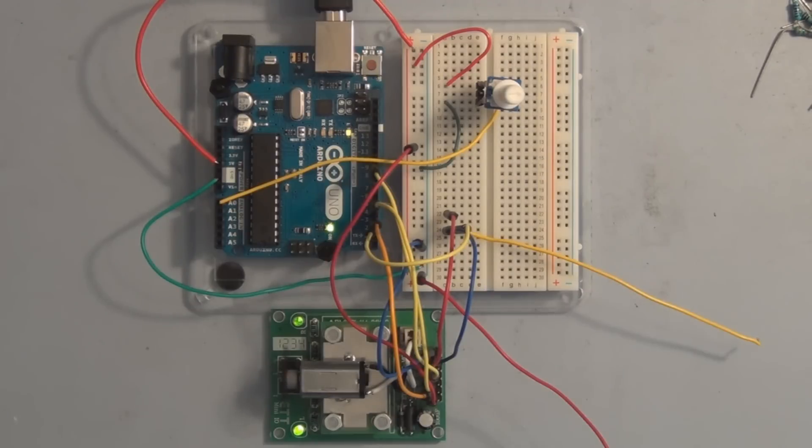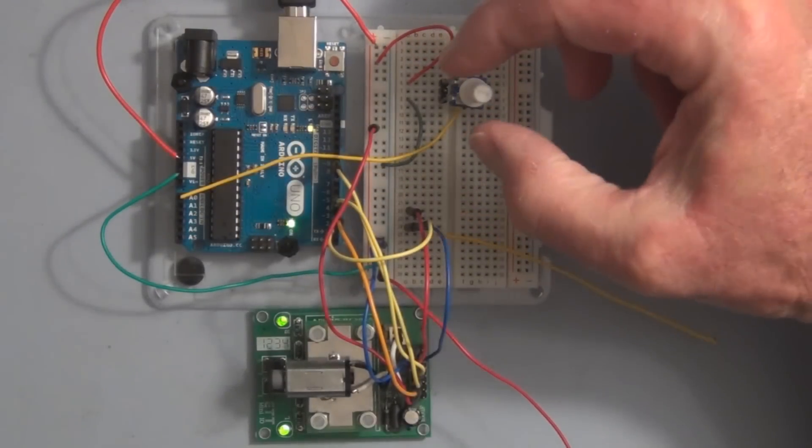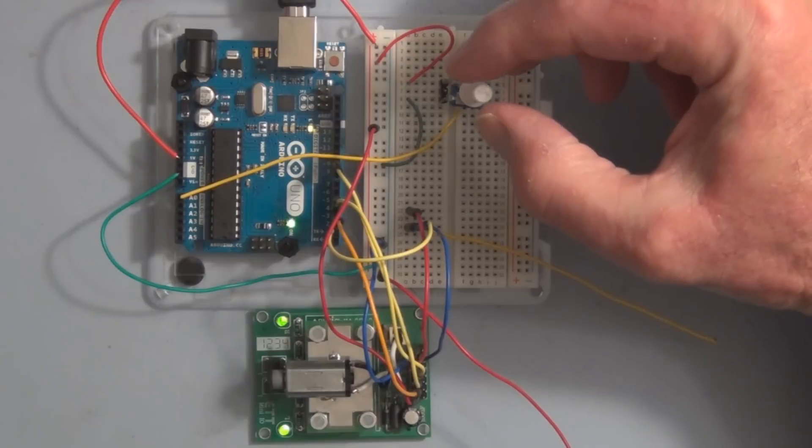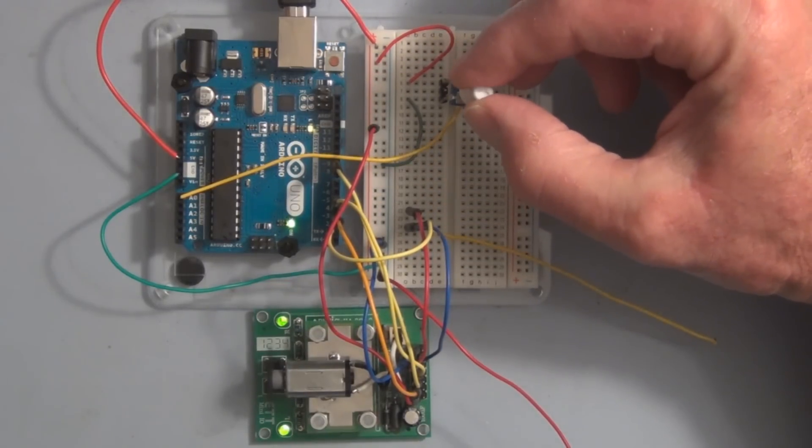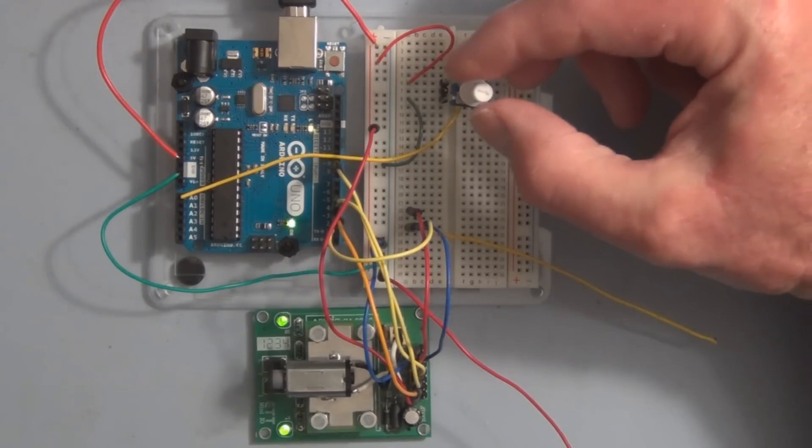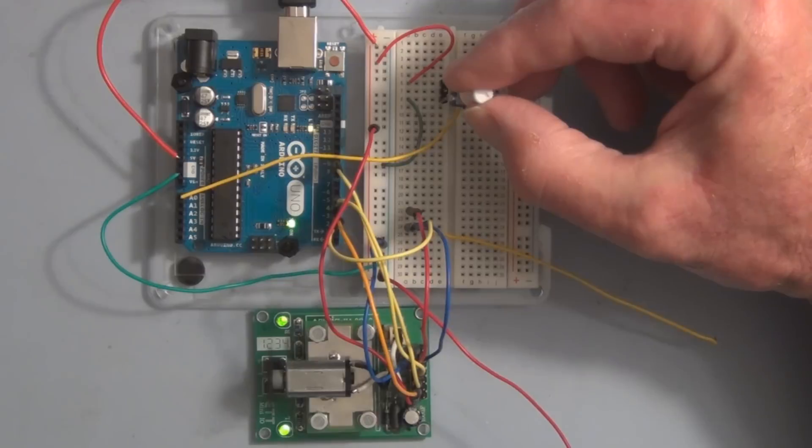You do this with either encoders, encoder wheels attached to the shaft. Another way is to break a beam of light and capture the pulses of that beam being broken. I've seen people use computer fans and have the fan blades break the beam of an infrared detector, infrared LED. People have used Hall effect transistors and positioned them near a motor or a drill and measured the pulses from the magnets on the motor.